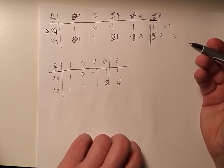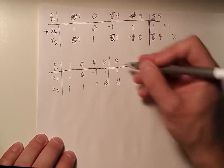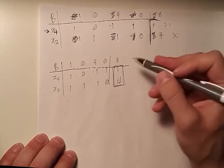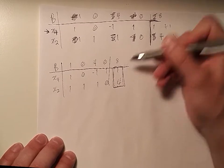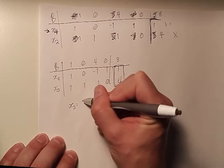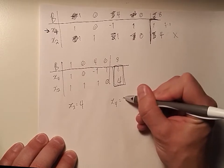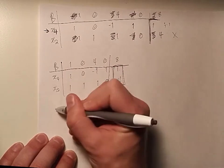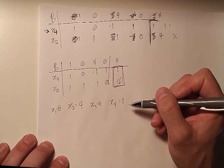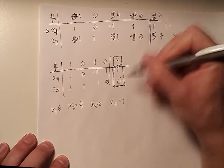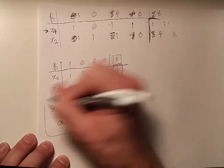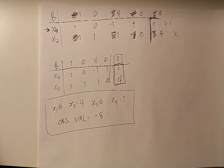Now I check again: are there any negative objective coefficients? There are not — only positive values 1 and 4 and zeros. So I'm done. To recover the solution: the right-hand side values below the upper-right corner give the optimal values. So x2 equals 4, x4 equals 1, and x1 and x3 are zero. The optimal objective value is the negative of the upper-right corner value, which is negative 8.